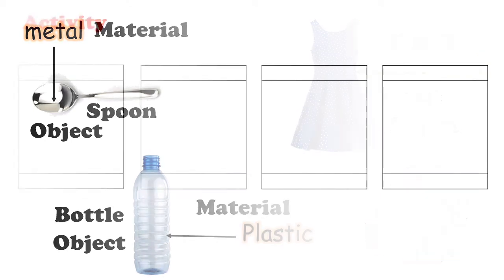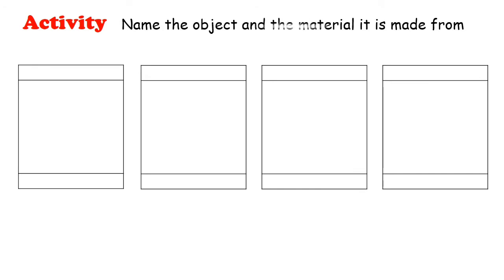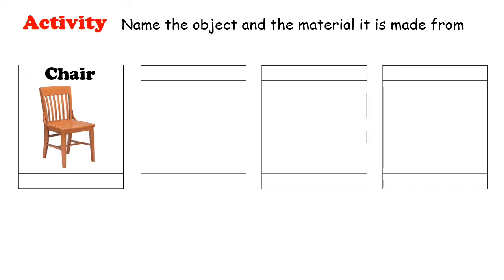Good job! Are you ready now to do an activity? Name the object and the material it is made from. Look at the first object — what object is this? It's a chair — very good. The object is the chair. What material makes the chair? Wood — very good.